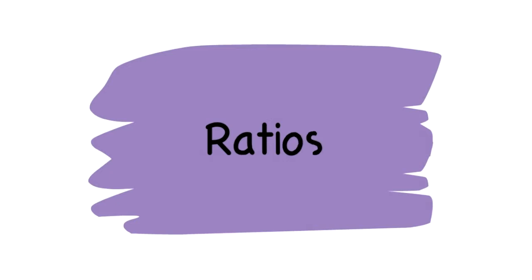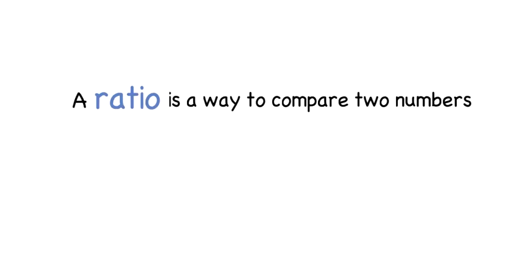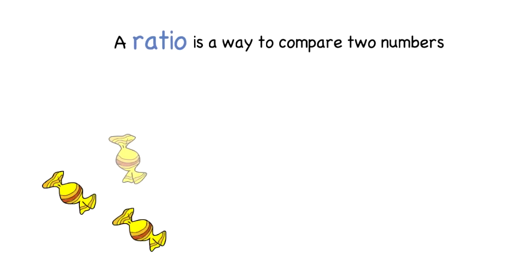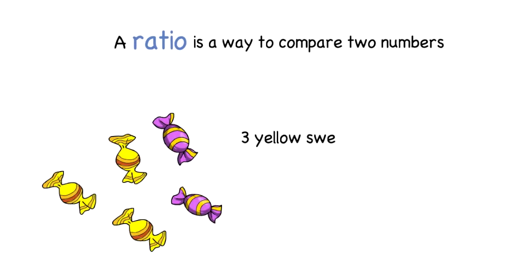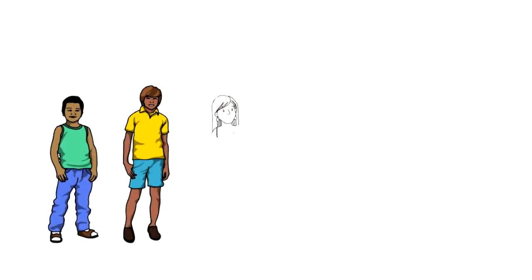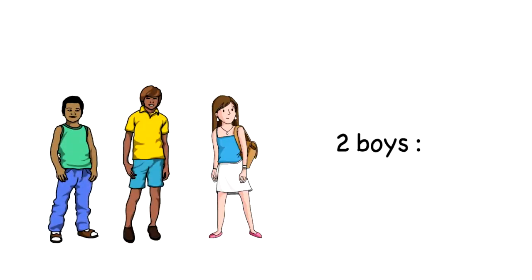Hi everyone, welcome back to Fat Cat Maths. This week we're going to be talking about ratios. A ratio is simply a way to compare two or more numbers. For example, here we've got three yellow sweets and two purple sweets, so the ratio would be three to two.